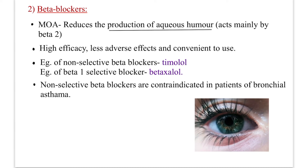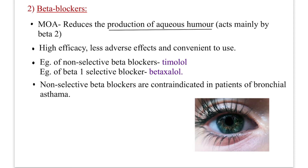Second class: beta blockers. They reduce the production of aqueous humor, acting mainly via beta-2 receptors. They have high efficacy, fewer adverse effects, and are convenient to use. The non-selective beta blocker example is timolol; the beta-1 selective blocker is betaxolol, which is less efficient since the action here is mainly via beta-2. Non-selective beta blockers are contraindicated in bronchial asthma because their beta-2 activity causes bronchoconstriction. Therefore, betaxolol (beta-1 selective) is used in asthmatic patients.